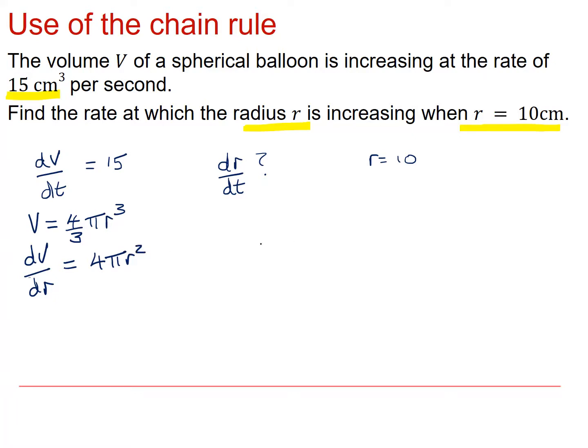And if I use the chain rule, I know that dV by dt is equal to dV by dr times dr by dt. Now, I know this, I know this, and I want to find this.